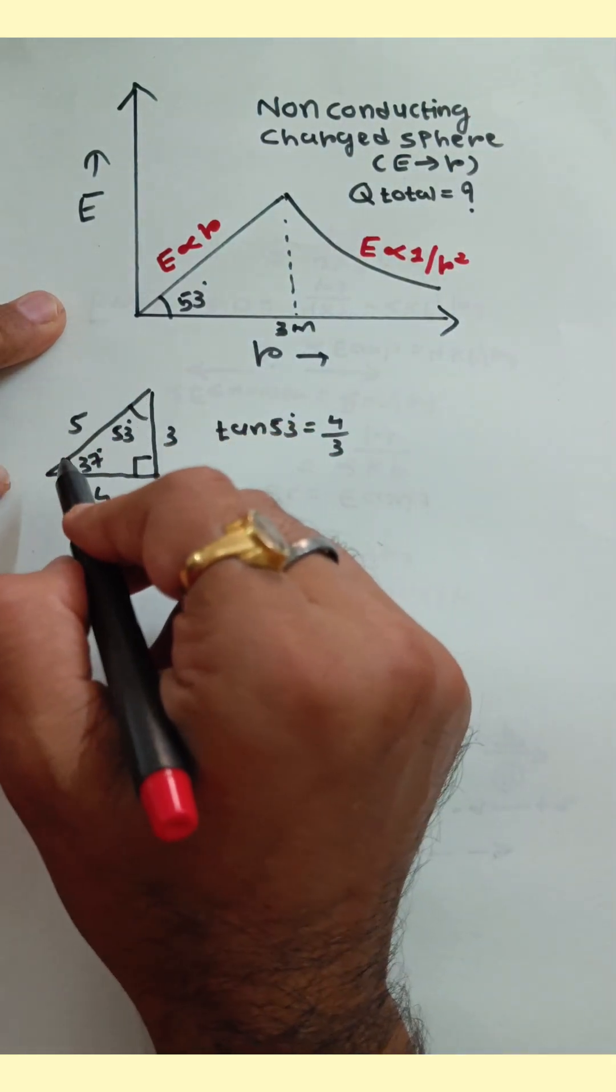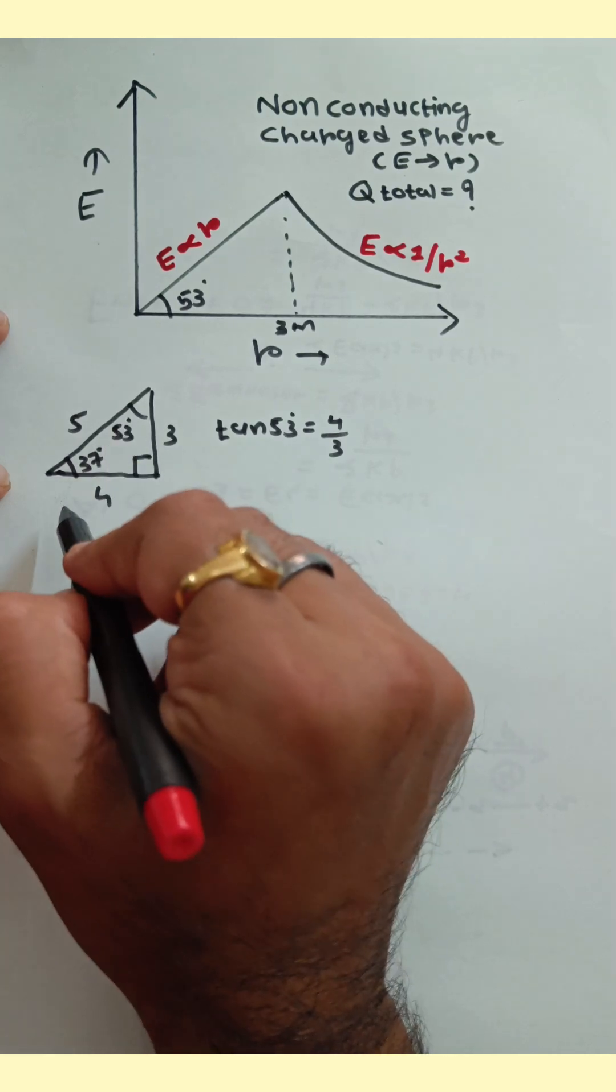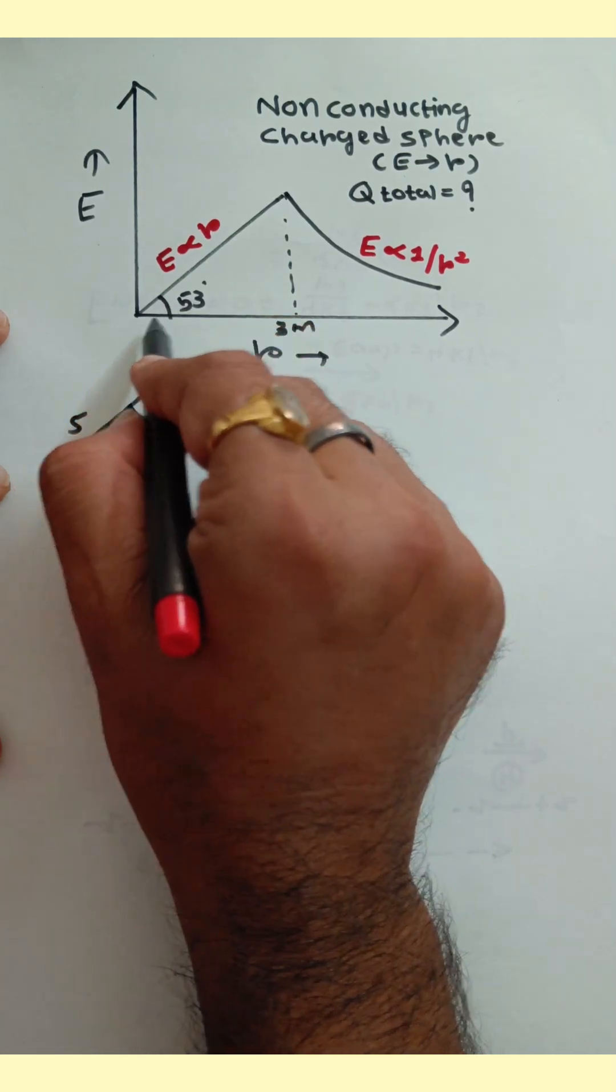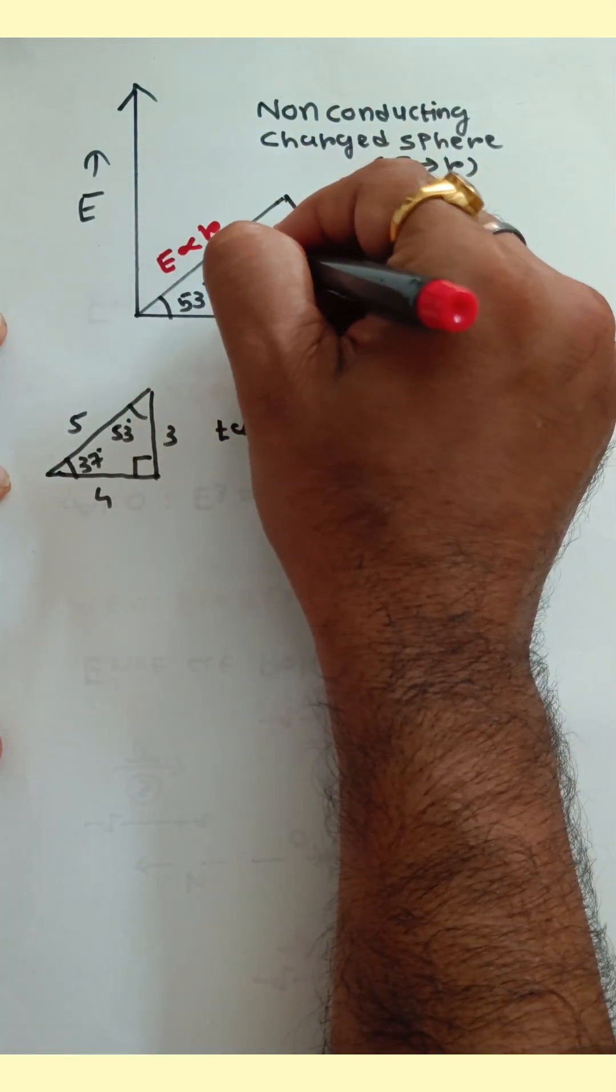Now consider this perpendicular triangle: 37 degrees, 53 degrees, and 90. Tan 53 is equal to 4 by 3. Here the angle is 53. Horizontal distance is given 3, so vertical is 4.